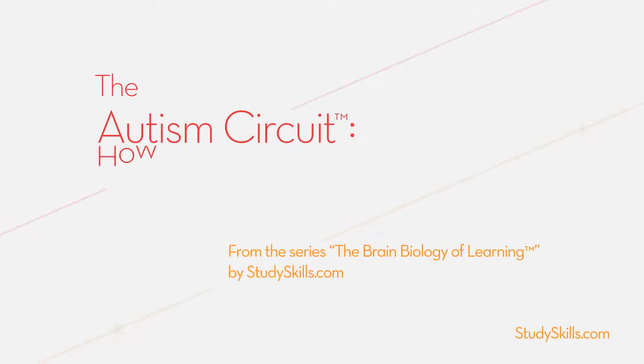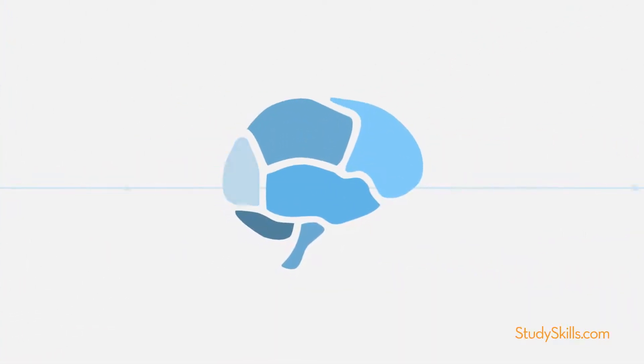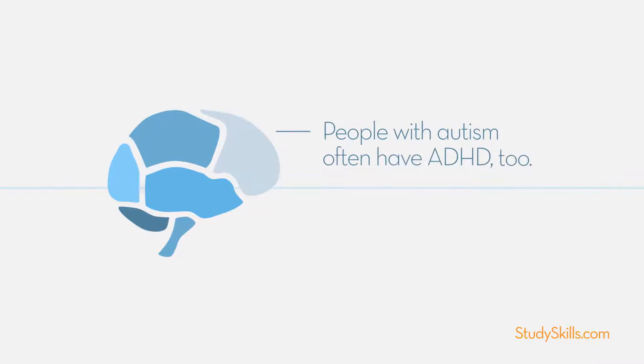The Autism Circuit – How Autism Works. Autism is the term we use when more than one region of the brain has a low supply of brain chemicals. Since the front brain is often impacted by these power outages, people with autism often have ADHD too.